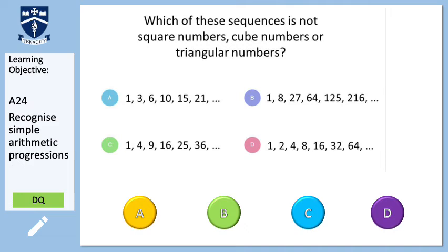We now have a diagnostic question. It says: which of these sequences is not a square number, cube number, or triangular number sequence? Have a look and spot which one does not belong — which one is not square, cube, or triangle? Once you have done that, come back to the video.